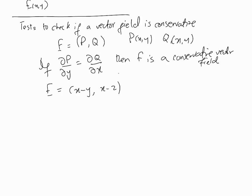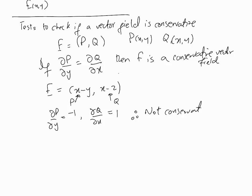Here's an example: the vector field has components P = x minus y and Q = x minus 2. Taking the partial of P with respect to y gives minus 1, and the partial of Q with respect to x gives plus 1. Since these are not equal, this vector field is not conservative. It's as simple and quick as that.